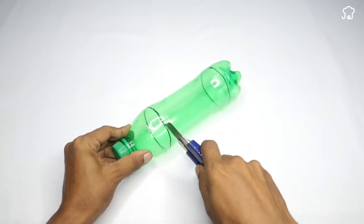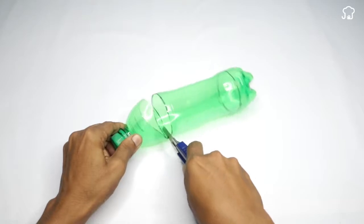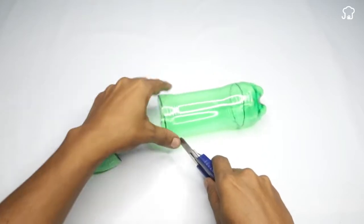Now, with a cutter, we will cut right on the lines that we had drawn previously. We will cut both ends until the bottle is separated into three parts.